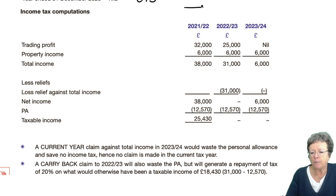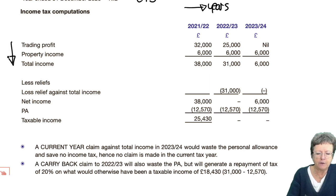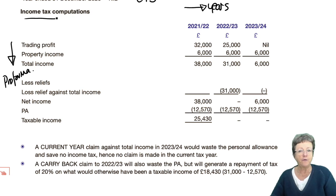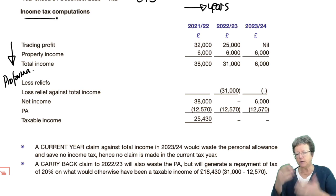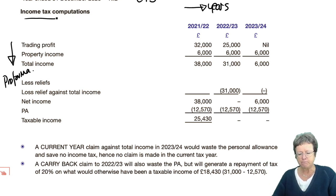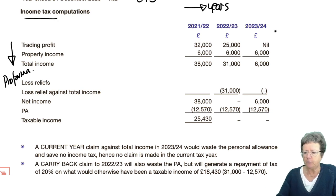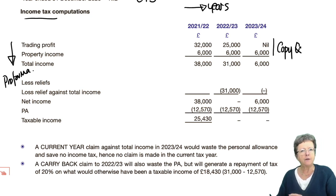Years across the top, pro forma down the side. This pro forma is an income tax pro forma, and you should have done that chapter before you get to this stage — you should be doing them in a logical order. What you then need to do is copy the question into the answer: both the trading profits and the property income have been copied from the question.